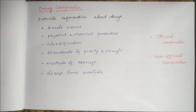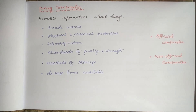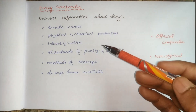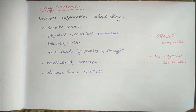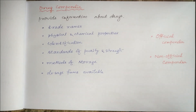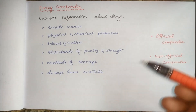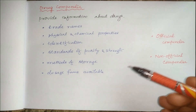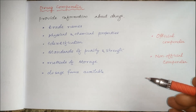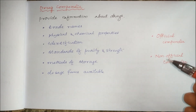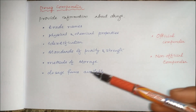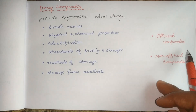Today we will study drug compendia. Drug compendia is a book which provides information about drugs — its physical properties, chemical properties, different brand names or trade names, how to identify the drug, its standards of purity, standards of strength, different strengths available, methods of storage, doses forms available, and the ingredients present in that drug.